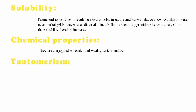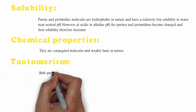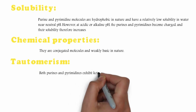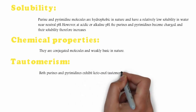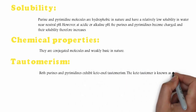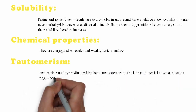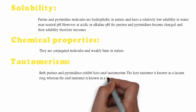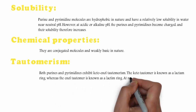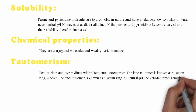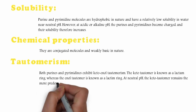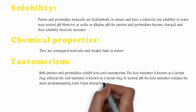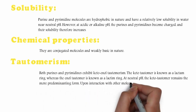Tautomerism. Both Purines and Pyrimidines exhibit Keto-Enol Tautomerism. The Keto Tautomer is known as a Lactam ring, whereas the Enol Tautomer is known as a Lactim ring. At neutral pH, the Keto Tautomer remains the more predominant form.